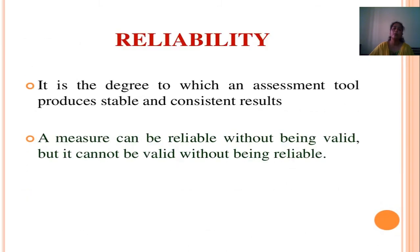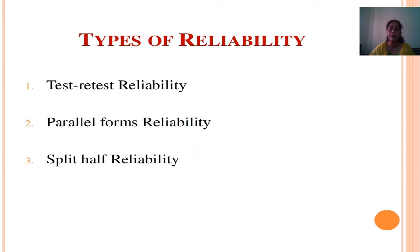Coming to Reliability — it is the degree to which an instrument produces stable and consistent results. A measure can be reliable without being valid, but it cannot be valid without being reliable.